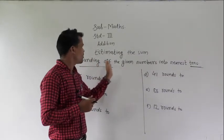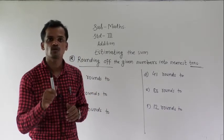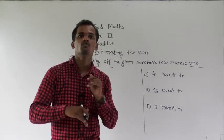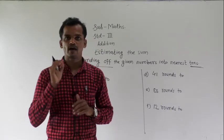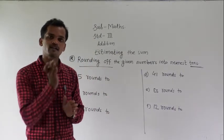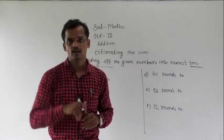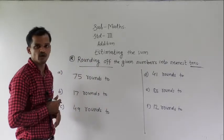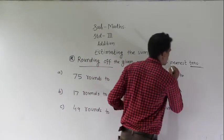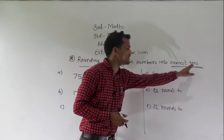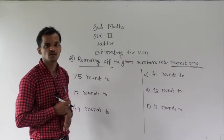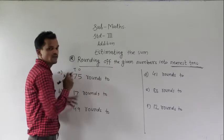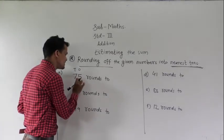While rounding a number to the nearest 10, you have to see the ones place digit. If it is 5 or greater than 5, the number will be rounded up. If it is smaller than 5, the number will be rounded down. For example, this number is 75, and the instruction is to round it to the nearest 10. The ones place digit is 5.